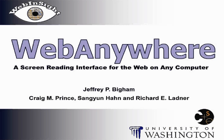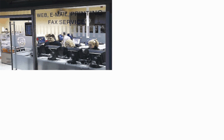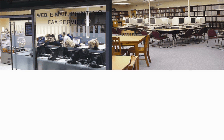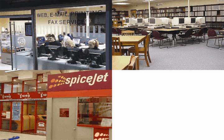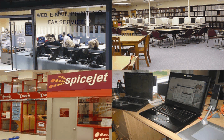Fulfilling the promise of a web-enabled global community means enabling blind web users to access their information and collaborative web services wherever they happen to be on whatever computer they happen to have access to. Whether blind web users simply want to check their email at an internet cafe, look up the next conference deadline from their university library, collaboratively edit a document from a public kiosk at the airport, or use a sighted friend's laptop without worrying about what operating system it's running, taking full advantage of the global web means connecting anywhere.